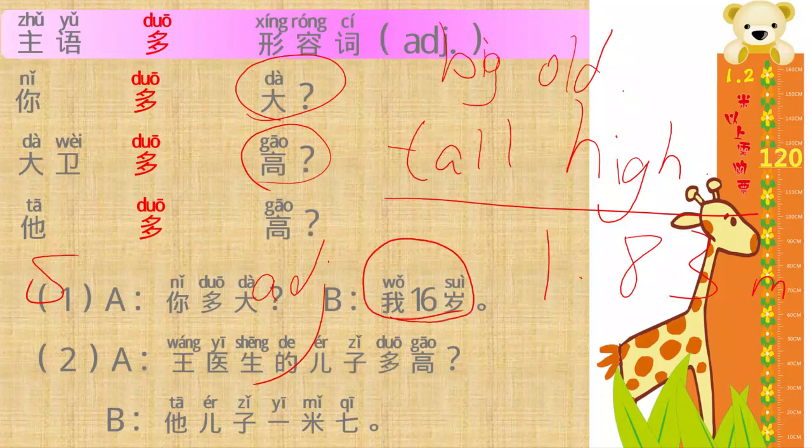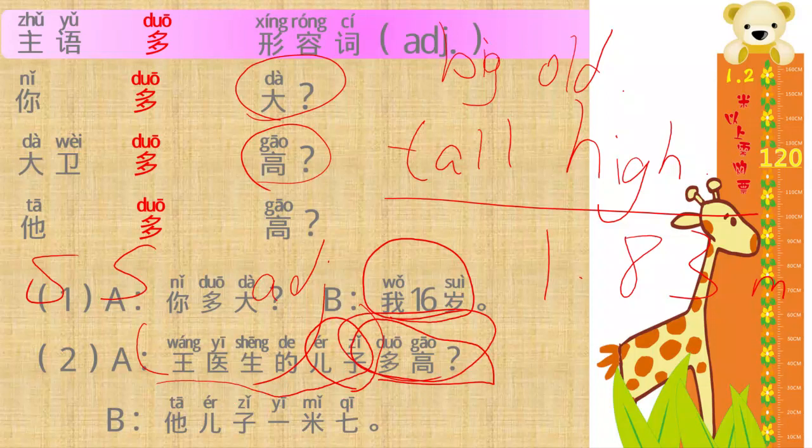我十六岁 王医生的儿子. Together, there are a subject 王医生的儿子 Dr. Wang's son. 多高? How tall is he? 他儿子 His son 一米七. 一米七, okay, that means 1.70 meters.